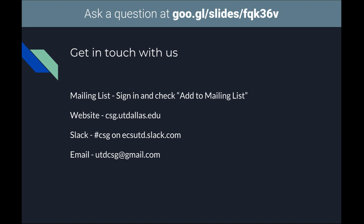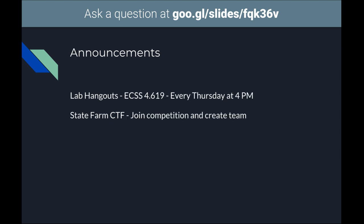A couple of events and announcements: we have lab hangouts every Thursday at 4 o'clock in the lab ECS 4.619. Basically it's where Jake and whoever else is there, if there are any more officers, we just kind of hang out and talk about security. If you have any questions, you can drop by and we'll be happy to answer anything.